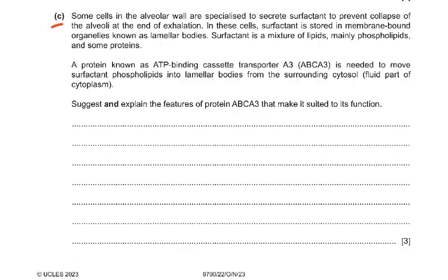Part C: Some cells in the alveolar wall are specialized to secrete surfactant to prevent collapse of the alveoli at the end of exhalation. Surfactant is stored in membrane-bound organelles known as lamellar bodies. Surfactant is a mixture of lipids, many phospholipids, and some proteins. A protein known as ATP binding cassette transporter A3 (ABCA3) is needed to move surfactant phospholipids into lamellar bodies from the surrounding cytosol.